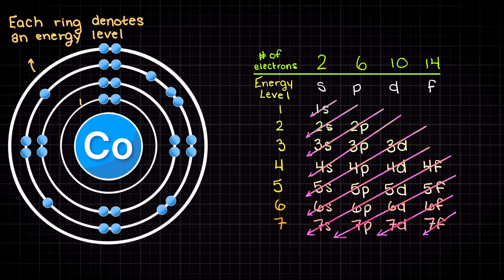So each row here is associated with a ring on our Bohr model. The further we move away from our center, the higher energy level we are at.